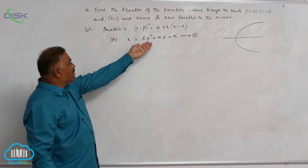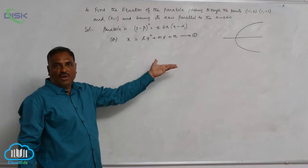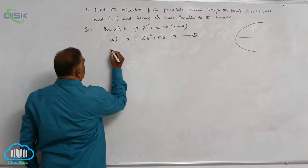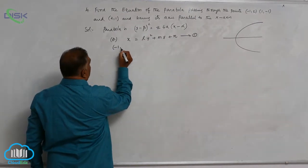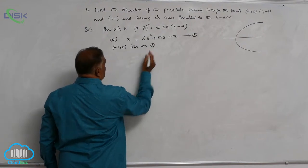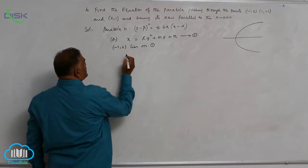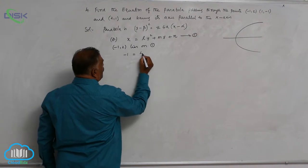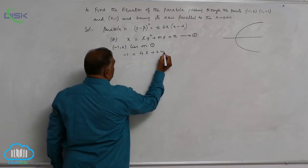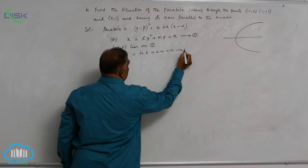Now claim that the parabola passes through each and every point. So (-1, 2) lies on equation 1. Substitute very carefully. This is -1 = 4l + 2m + n, equation 2.